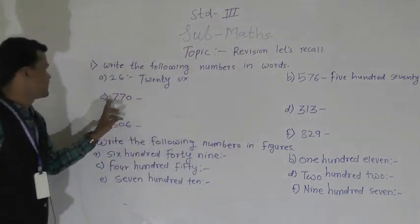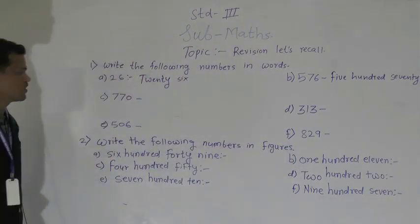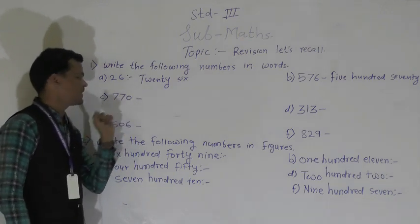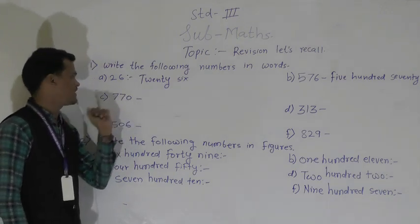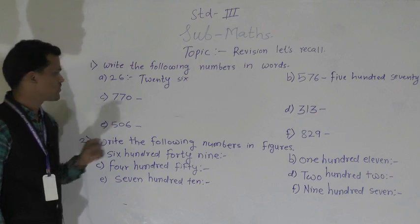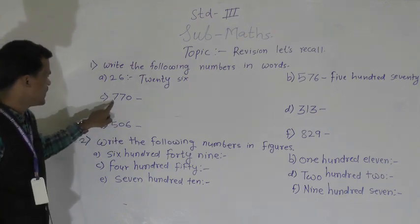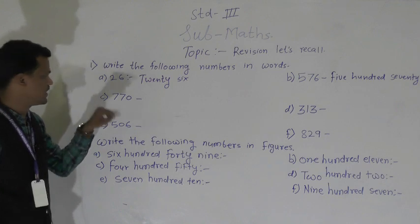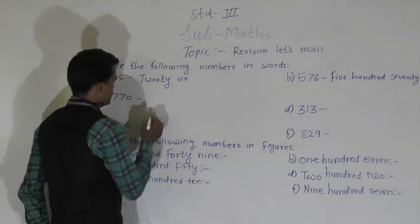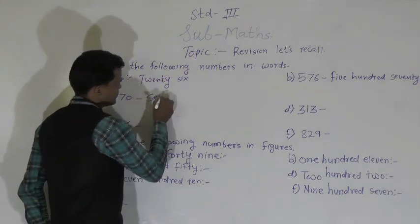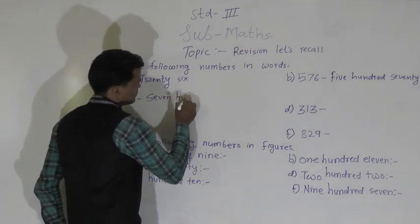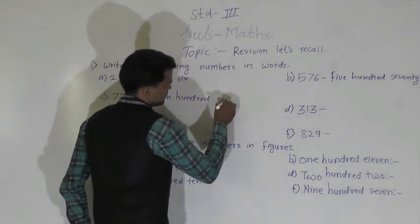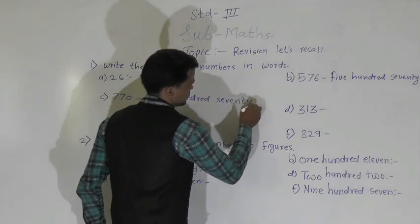Next number: 770. At the ones place 0 is here, at the tens place 7, and at the hundreds place 7. So this number is 770. Write the spelling of this number: 770.